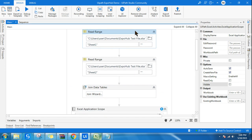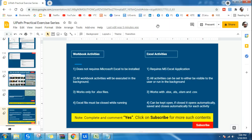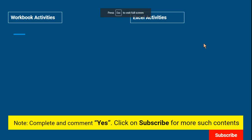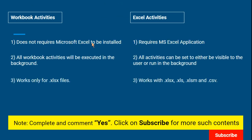For Workbook it always runs in the background — you can experiment with this. The third point: Workbook activities work only with .xlsx files. If you have a .xls, a macro-enabled file, or a .csv, the Workbook activity will not work. This is an important technical point. Excel activities, on the other hand, work with all different kinds of file formats.